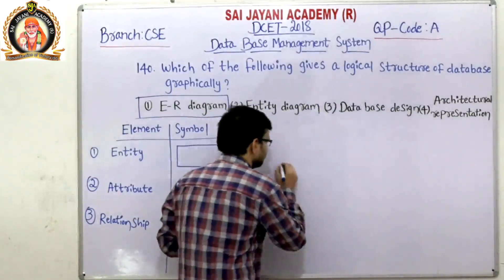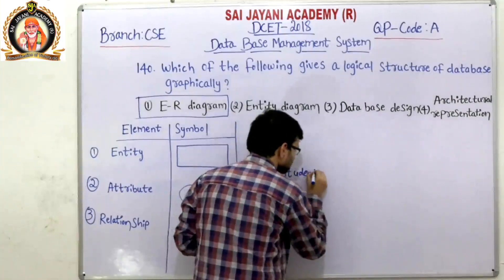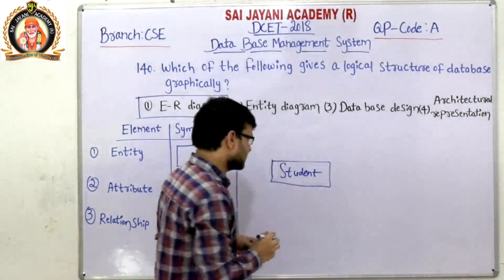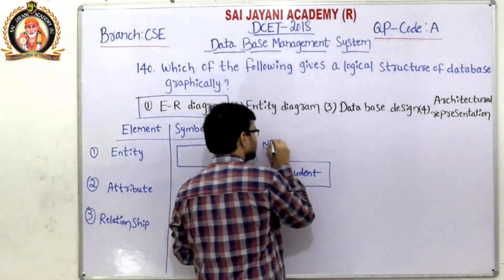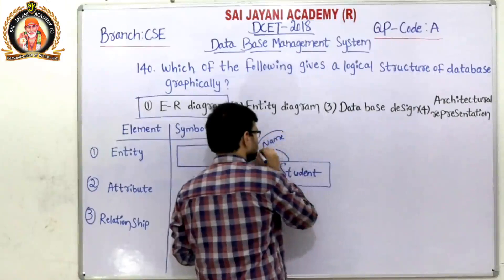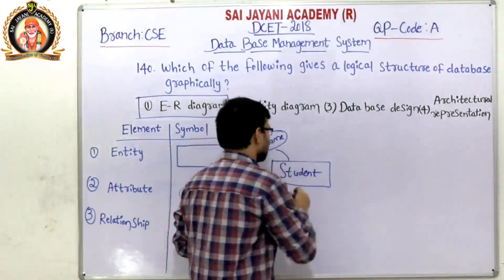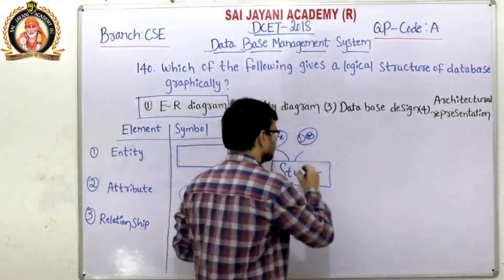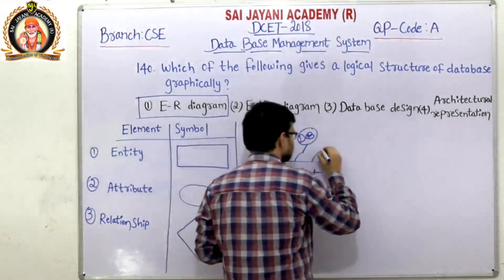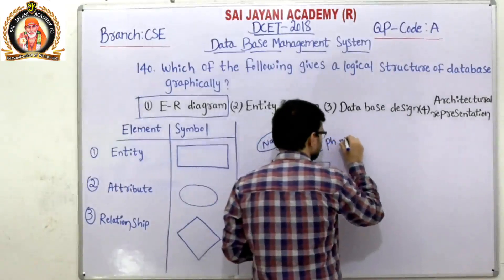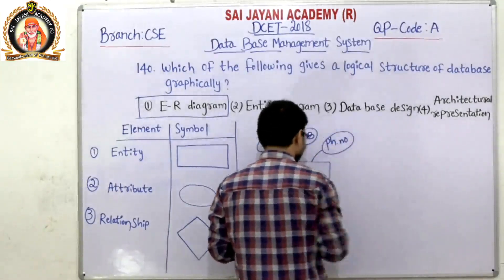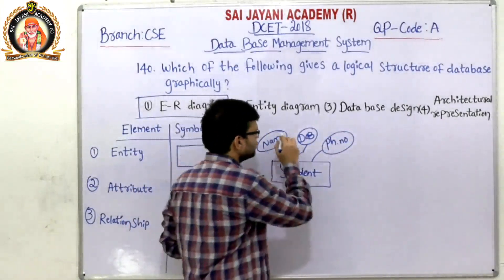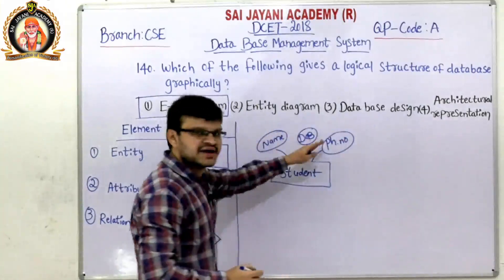For example, a student is one entity. Its attributes include student name, date of birth, and phone number. If we consider a course, it is also an entity with attributes such as course name, duration, and fees. So student is the entity, and name, date of birth, and phone number are its attributes; course is an entity with course name, duration, and fees as its attributes.